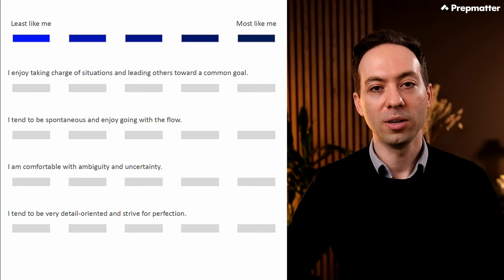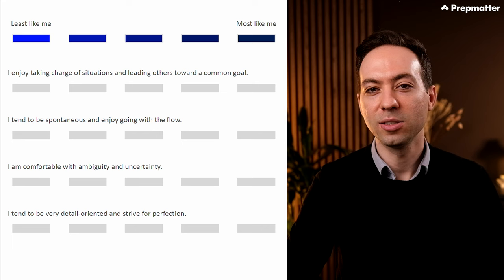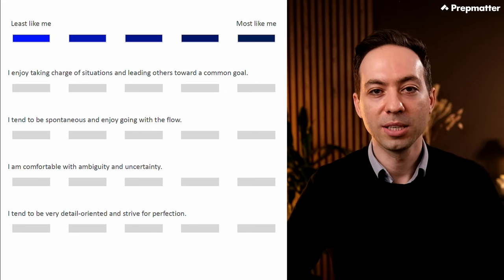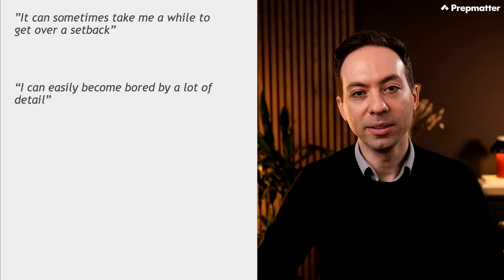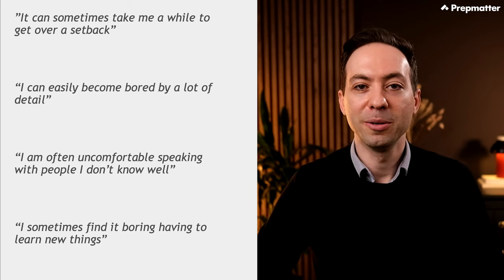Let's move on to the personality test. On each page, you will indicate to what extent four given statements reflect your behavior at work, ranging from least like me to most like me. You can only select an option once, so you need to order the statements accordingly. You can expect around 40 sets of four statements in the real assessment. Pay attention to two things: ensure your answers are consistent throughout, as traits like teamwork will be assessed by many slightly rephrased statements. Second, aim to portray your true self, but try to avoid traits that are not desired in consulting — for example, marking as least like me: 'It can sometimes take me a while to get over a setback,' 'I can easily become bored by a lot of detail,' 'I'm often uncomfortable speaking with people I don't know well,' and 'I sometimes find it boring having to learn new things.'